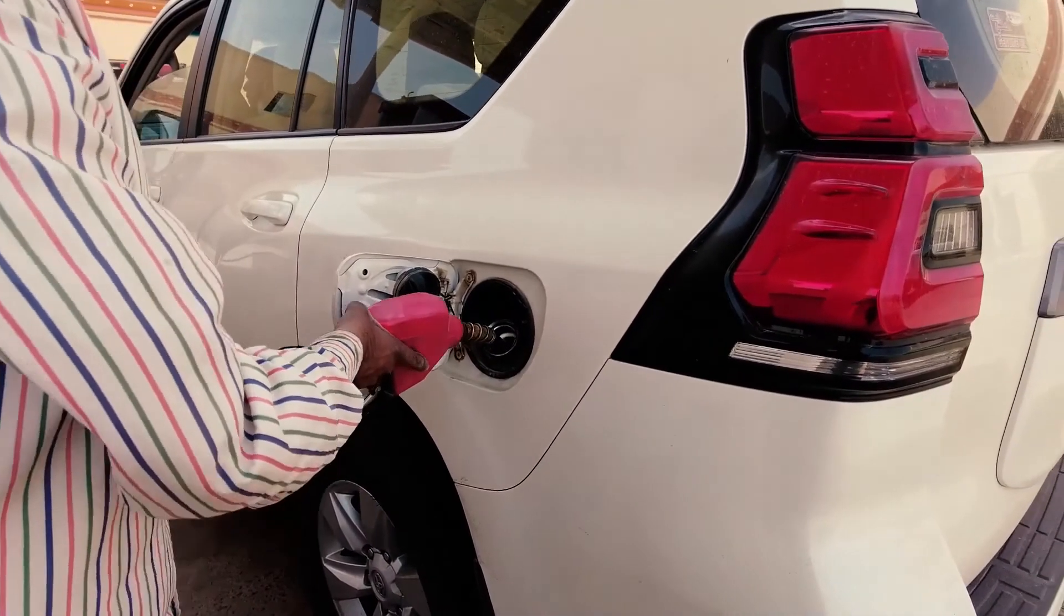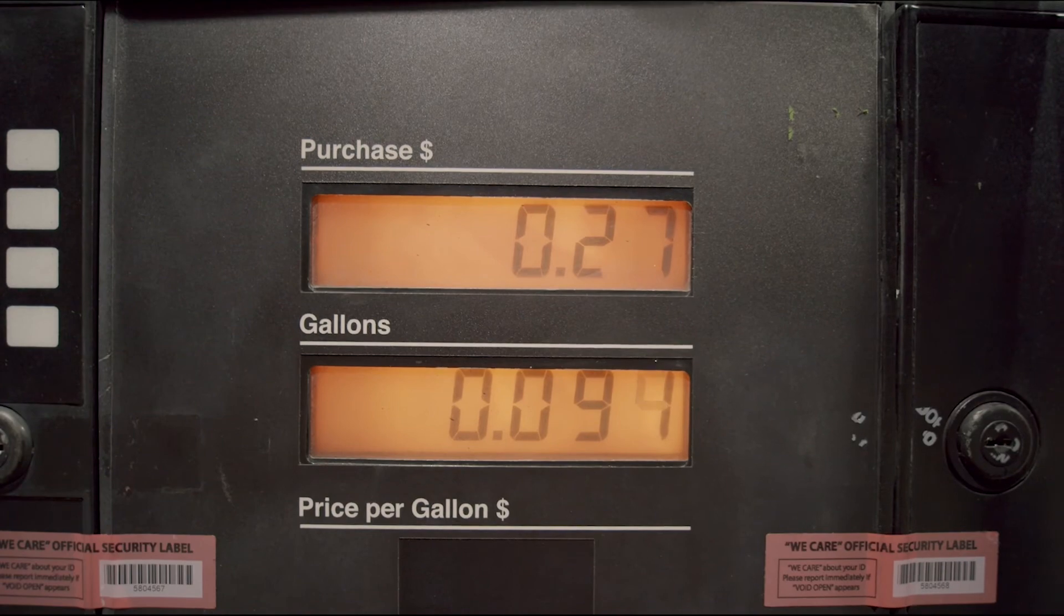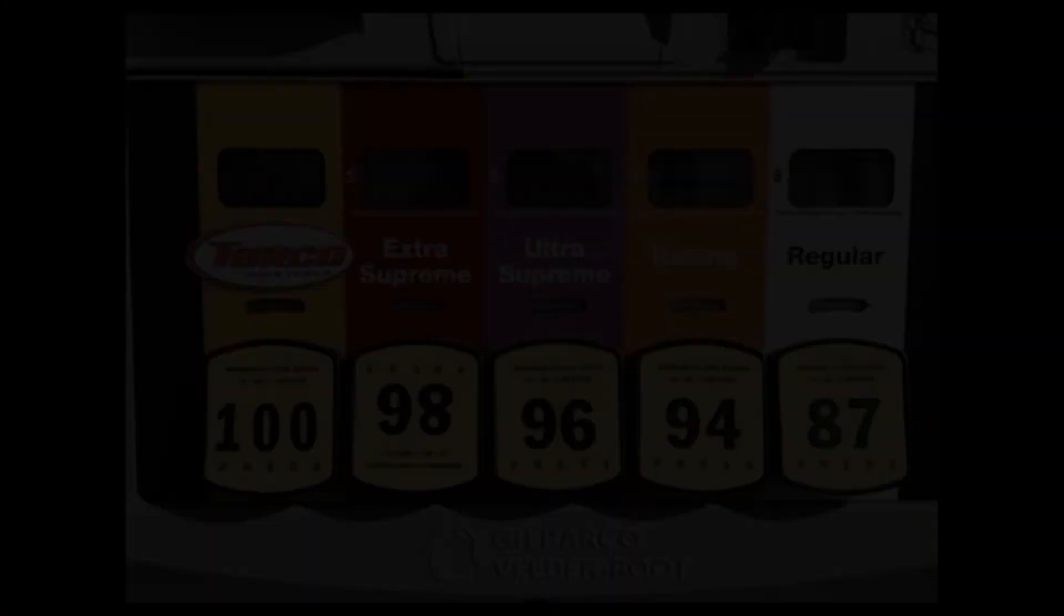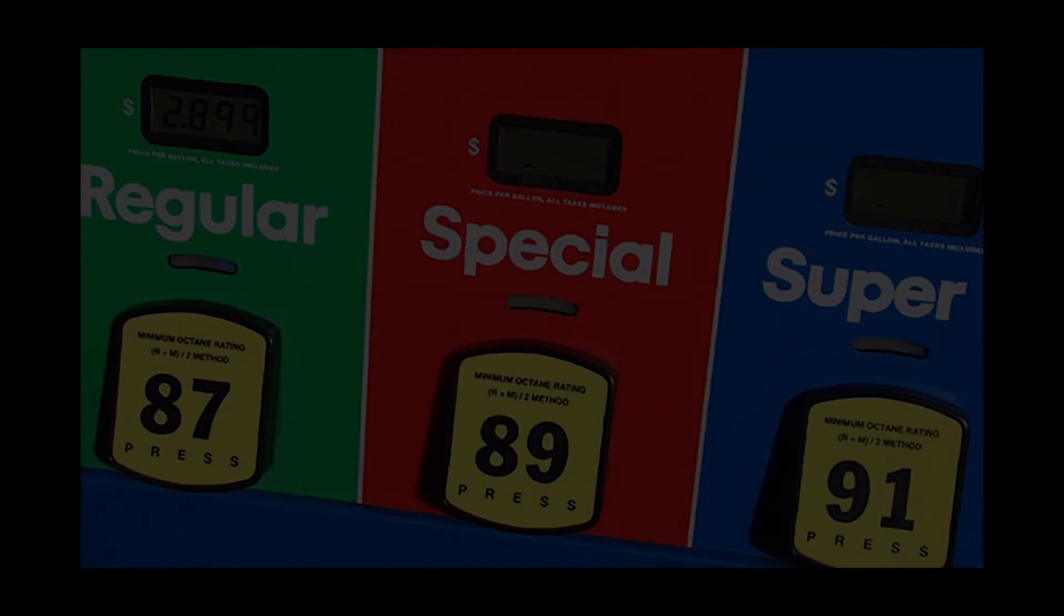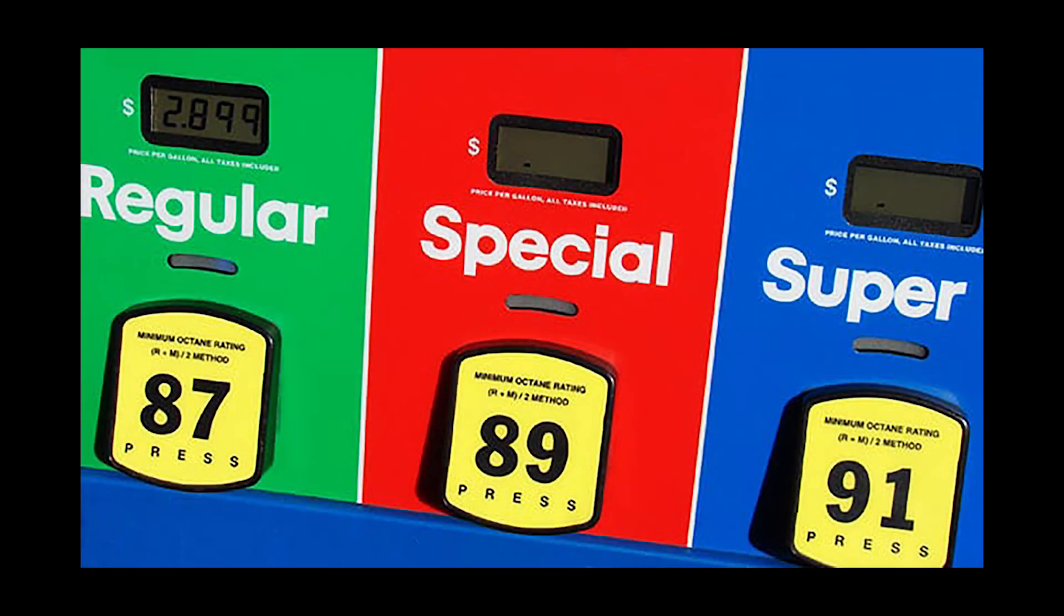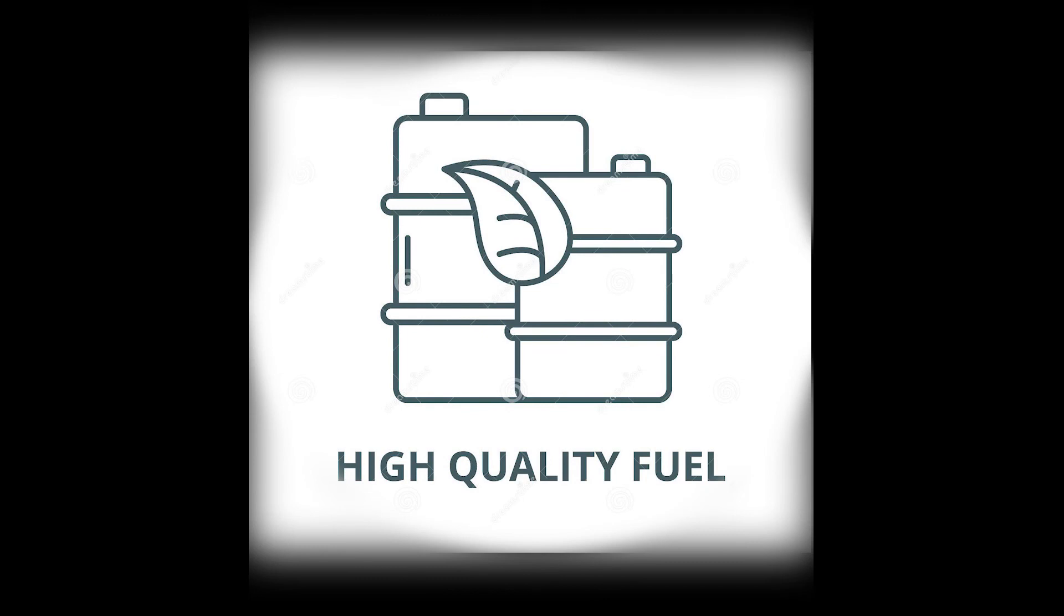Most SI engines use gasoline as the fuel. Nevertheless, selecting other fuels with higher octane rating will permit us to increase the compression ratio. Octane rating is a measure of the fuel's ability to resist knock. Nowadays, high-quality fuels are well-provided in developed countries.